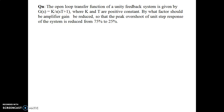Today we are going to do a problem on time domain specifications. The question is: the open-loop transfer function of a unity feedback system is given by G(s) = K / [s(sT + 1)], where K and T are positive constants. By what factor should the amplifier gain be reduced so that the peak overshoot of the unit step response is reduced from 75% to 25%?